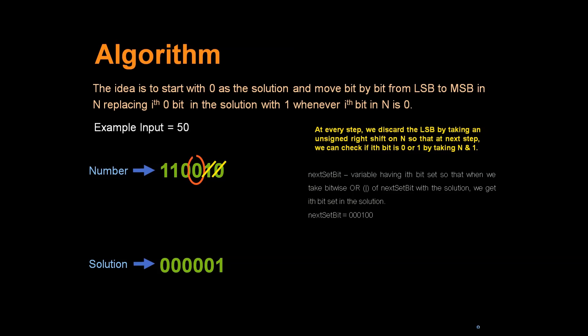We will take the next number which is 0. Yes it is 0. We will set the current bit in the solution by doing a bitwise OR operation on the solution and the next set bit. And we will again left shift the next set bit.